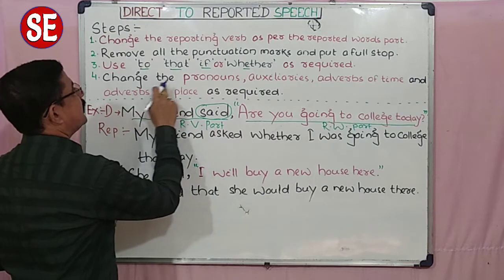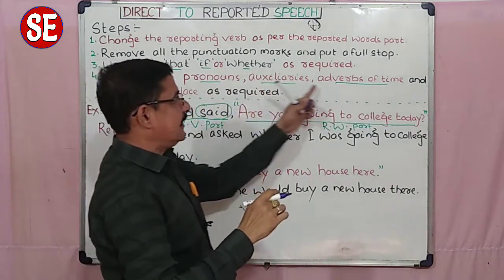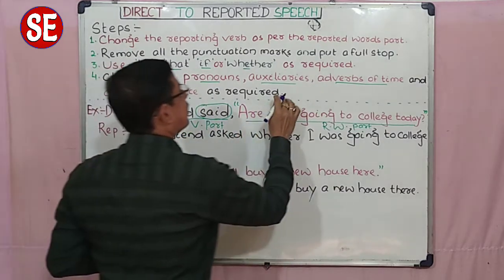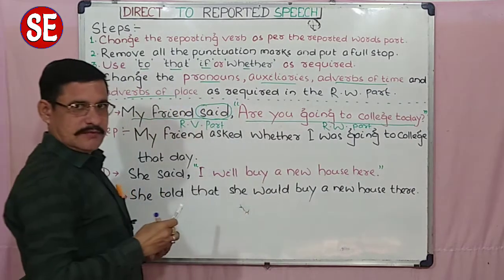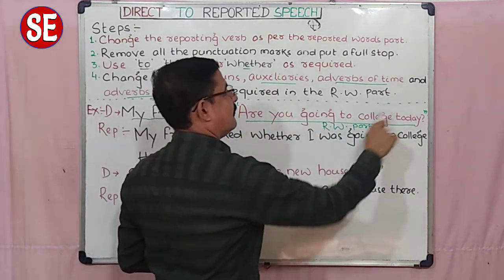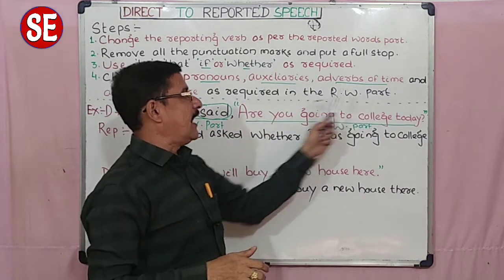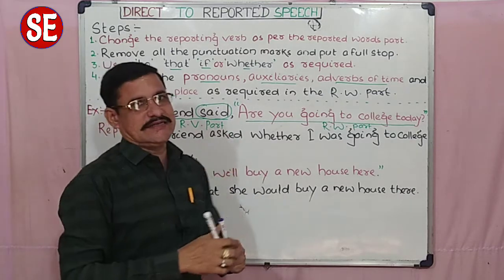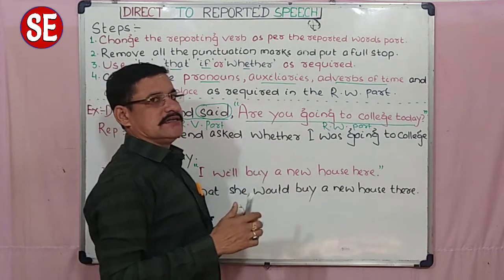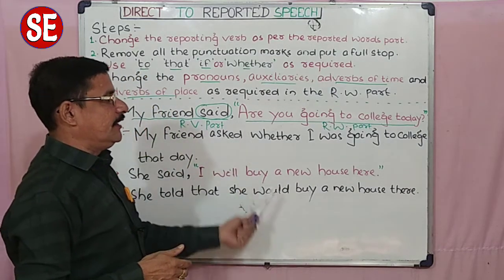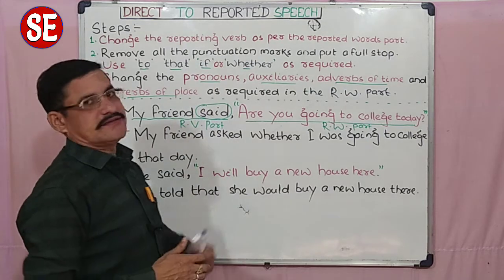The last step: change the pronouns, auxiliaries, adverbs of time, and adverbs of place — these four types of words. Change them in the reported words part, meaning inside the inverted commas. Change the pronouns, auxiliaries, adverbs of time, and adverbs of place as required. Sometimes it is not necessary to change them, but most of the time they do change. I have given only two examples here, but in the next video I will explain through many examples how these four steps are used.